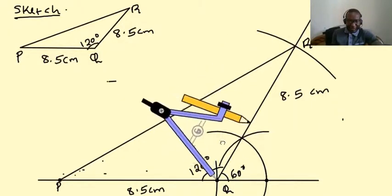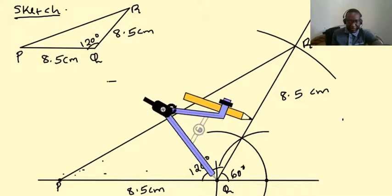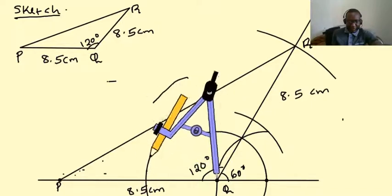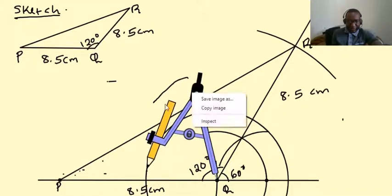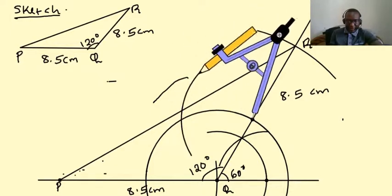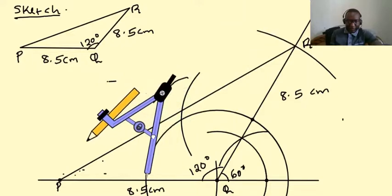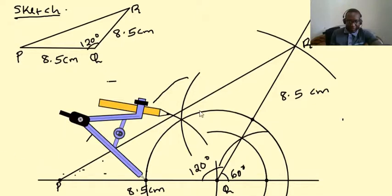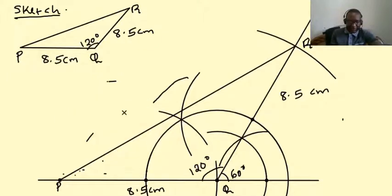Consider bisecting angle Q here. So we make an arc there, turn our compass, make this arc here. Then we use these two arcs to draw more arcs which intersect. So we are going to draw these arcs on this side. So we can see that these points form their arc meeting at this point here. So we get our ruler and we join point Q and where the arcs are meeting.